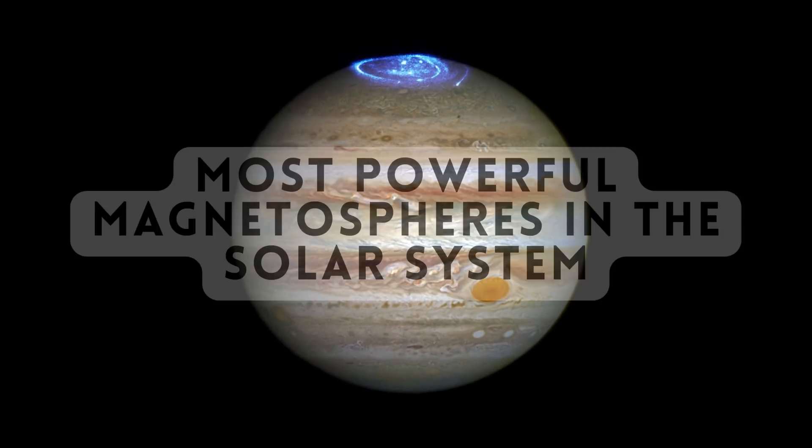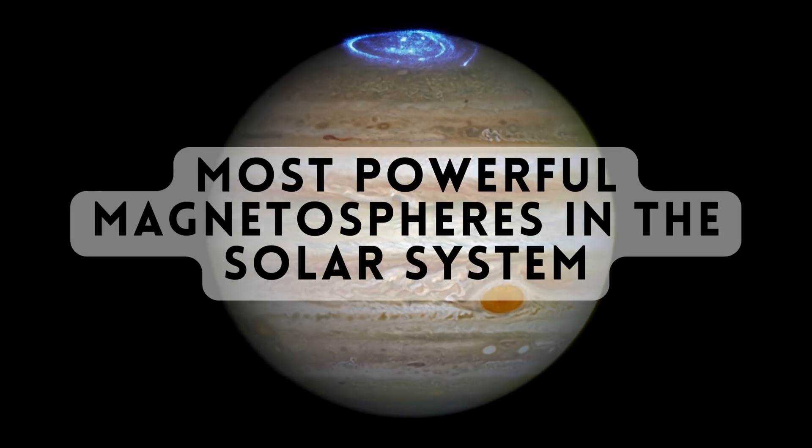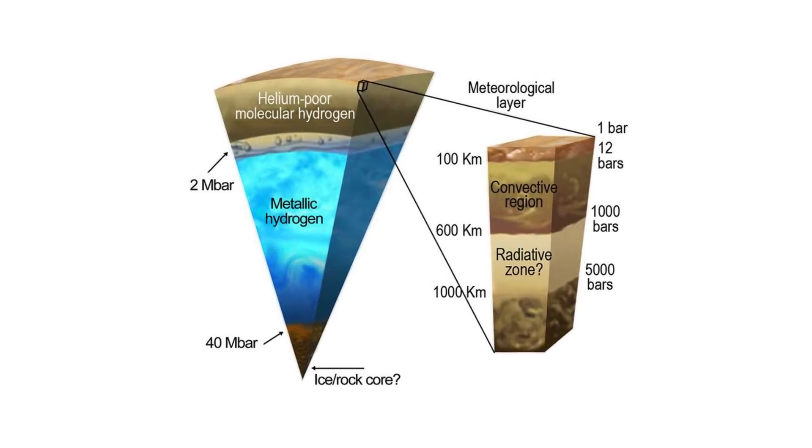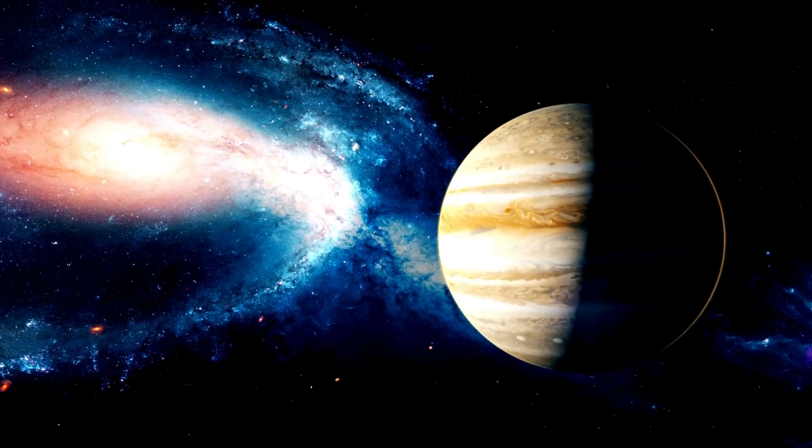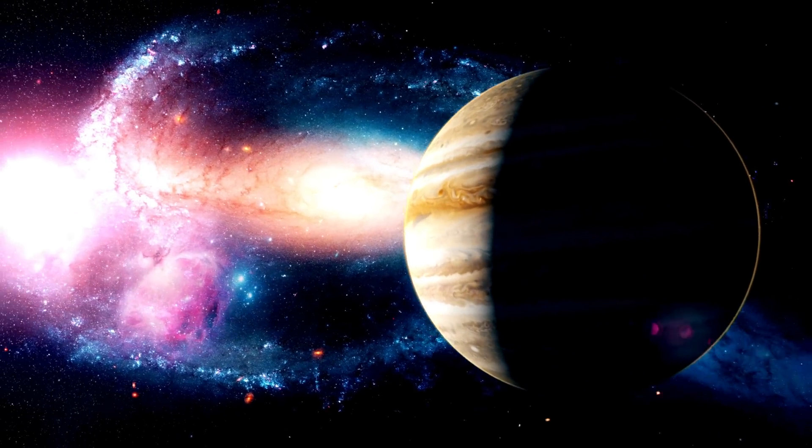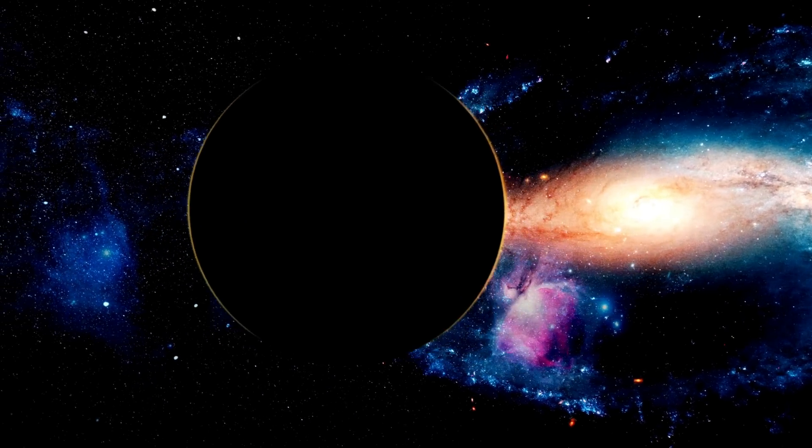Jupiter possesses one of the most powerful magnetospheres in the solar system generated by its liquid metallic hydrogen core. This magnetic field influences its dynamic auroras and poses unique challenges for spacecraft exploring the planet.